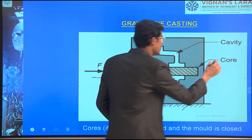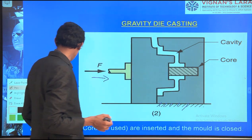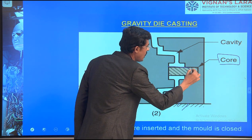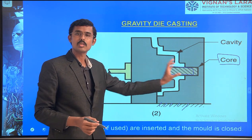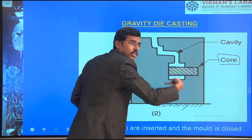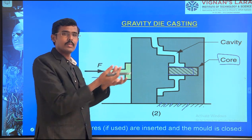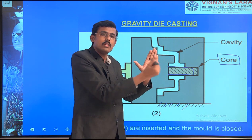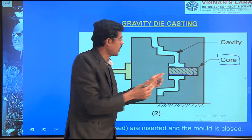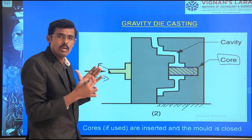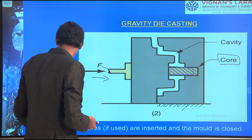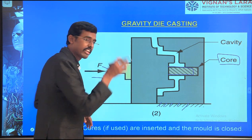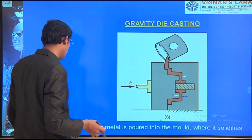If I want a hole in between, I am using a core — we have studied this. The core is utilized to make a cavity in between. I keep the core between the two mold boxes, and the molten metal comes down and fits around the core. When the object is removed, we get the product with a hollow form. According to the design, the product will have the internal shape we require. The core is placed before mold closing.